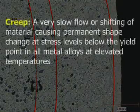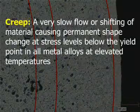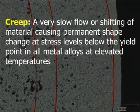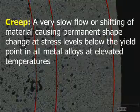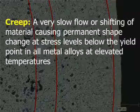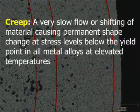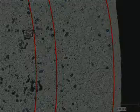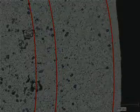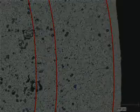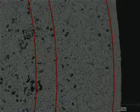Creep is a very slow flow or shifting of material, causing permanent shape change at stress levels below the yield point in all metal alloys at elevated temperatures. The temperature at which creep begins and the rate at which it progresses are generally indicated by the melting point of the alloy. The higher the melting point, the higher the threshold temperature, and the slower the rate.